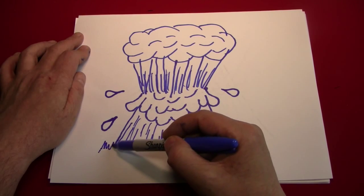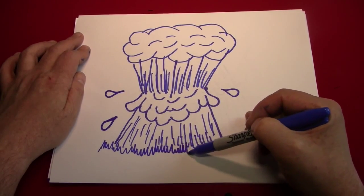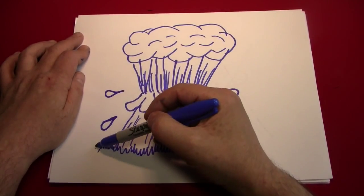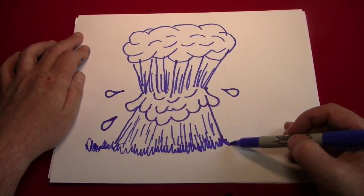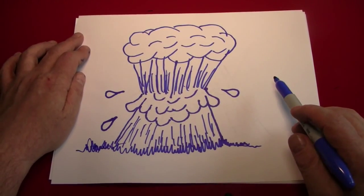Now we can just give some ground around the base of the mountain. Using our old friend, the grass pattern. Which is nothing but just wiggling the pen up and down as it goes across the page. And that's basically it.